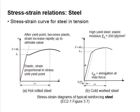This offset line intersects with the stress-strain curve at a specific point, and this intersection is considered as the yield point of the cold-worked steel.